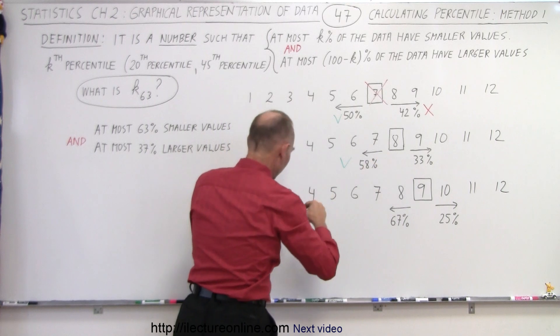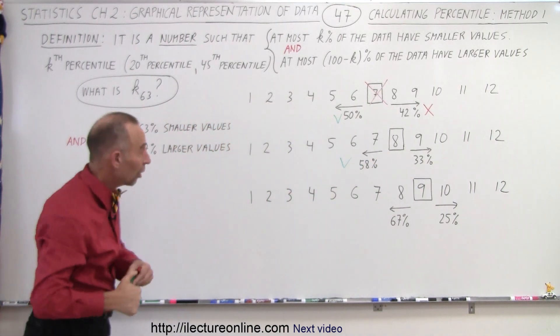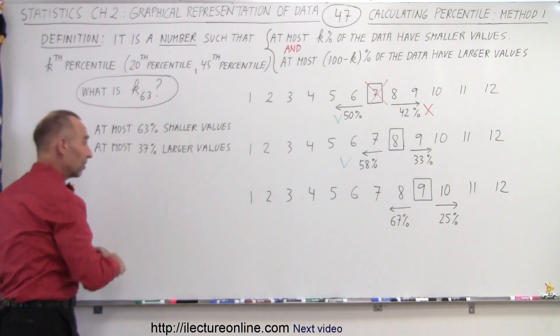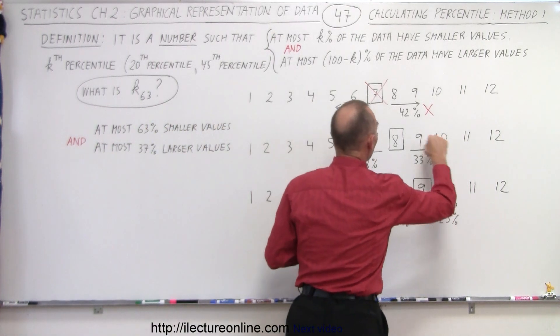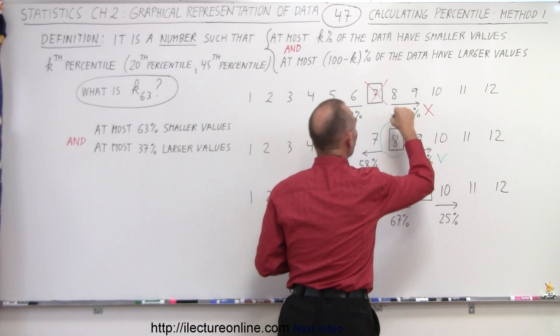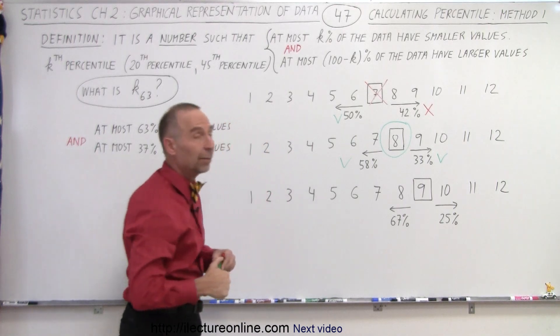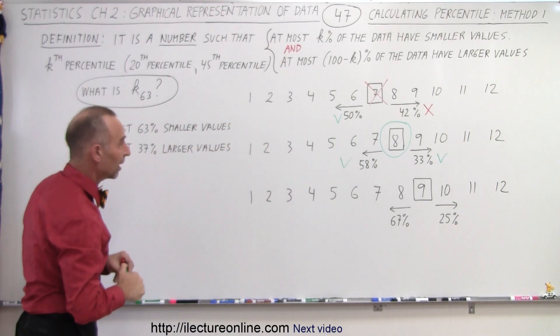And on the other side, 33% have larger values, which is less than 37%. So both of these conditions are met. And this would then be a good value, a good data point that represents the 63rd percentile.